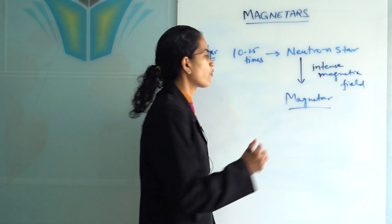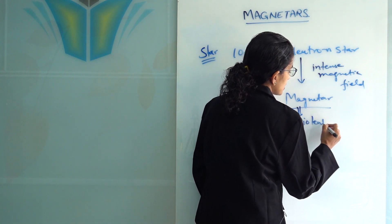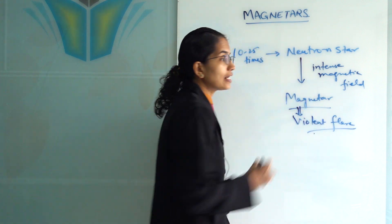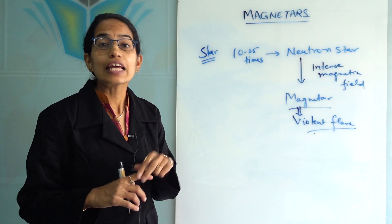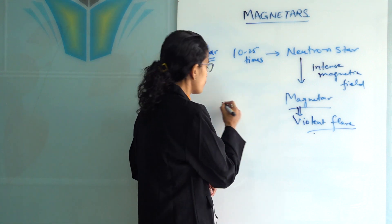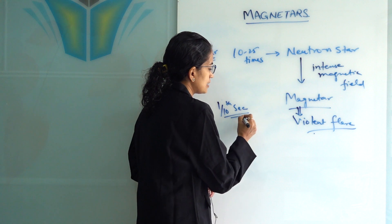These violent flares exist only for milliseconds, and even in those milliseconds they have a capability to generate intense amounts of energy. For example, in one tenth second, a magnetar releases energy which is nearly the energy provided by the sun in one lakh years.